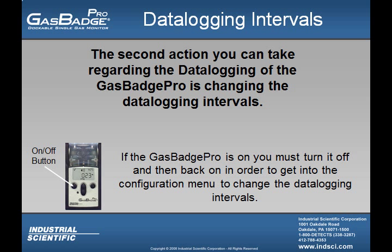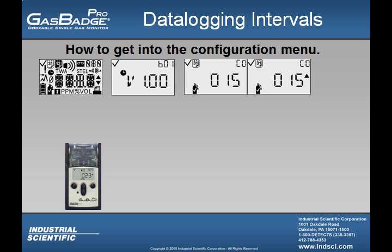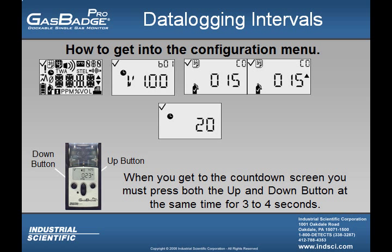The second action the user is able to access is the changing of data logging intervals. If the user is trying to change this value and the instrument is already turned on, they must first turn the instrument off and then back on again in order to get into the configuration menu. Once the user has turned the instrument on, they will see the startup screen showing the revision number, how many days since or until a calibration is due, and the countdown screen. Once the user sees the countdown screen, they must press the up and down buttons at the same time for roughly 3 to 4 seconds to access the configuration menu.